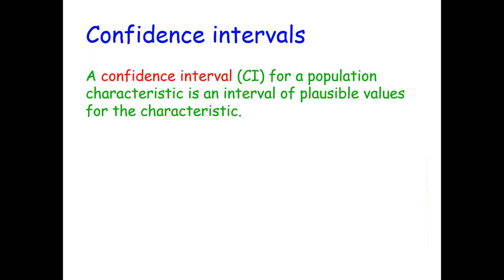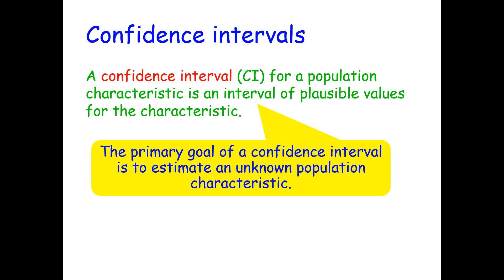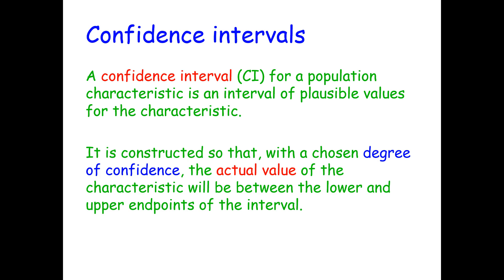A confidence interval, or CI, for a population characteristic is an interval of plausible values for the characteristic. The primary goal of a confidence interval is to estimate an unknown population characteristic. It is constructed so that with a chosen degree of confidence, the actual value of the characteristic will be between the lower and upper endpoints of the interval.